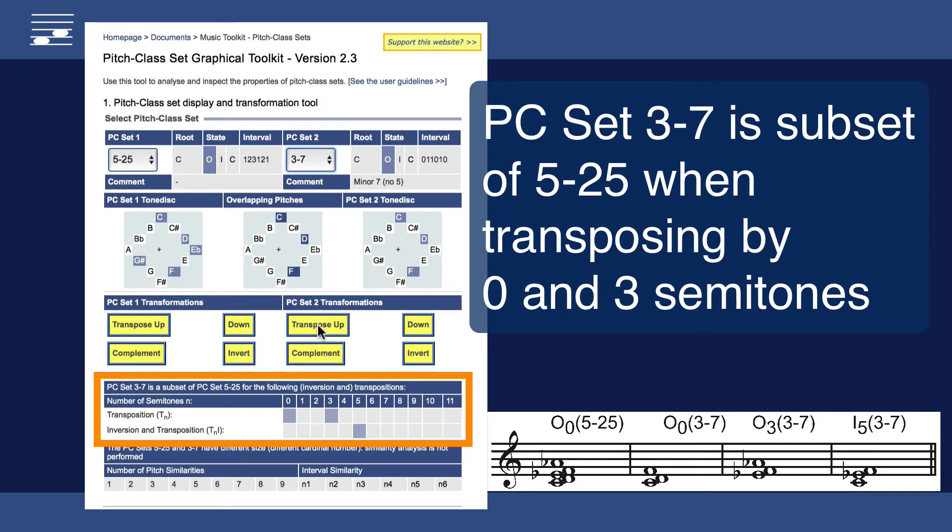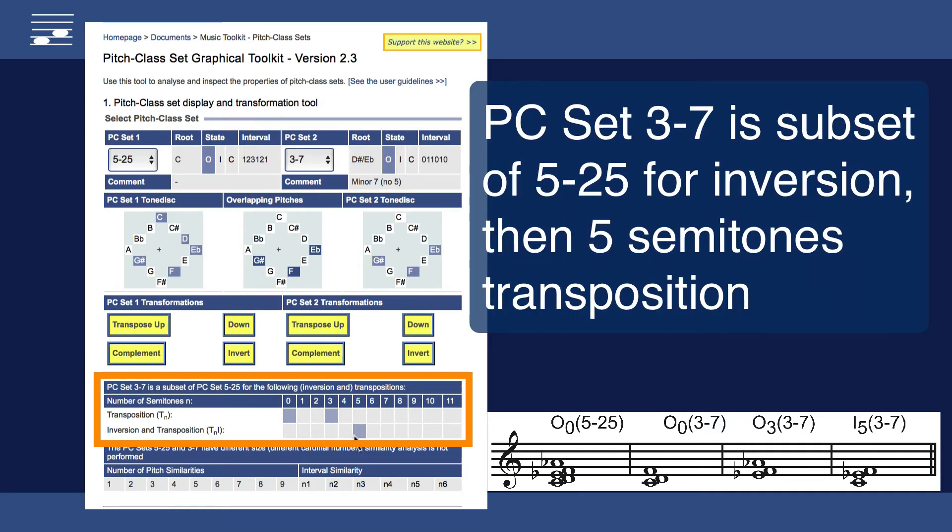Let's verify this property for upward transposition by a minor third. The subset property also holds when first inverting the set 3-7 followed by upward transposition by 5 semitones.